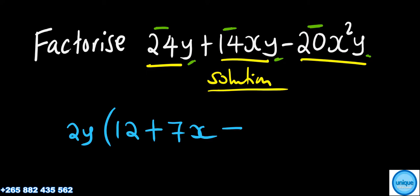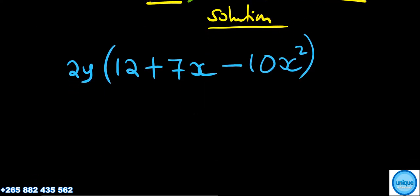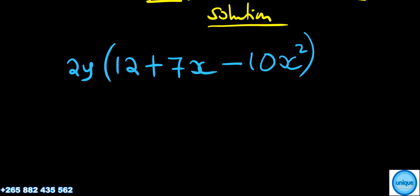The y's cancel, so we have 2y times bracket 12 plus 7x minus 10x squared. So the next thing we need to do, I want to see if I can factor this.